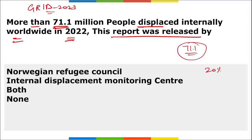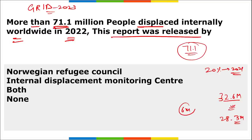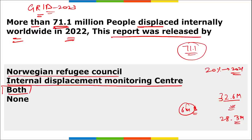This is an increase of more than 20% since 2021. Internal displacement by disasters — such as natural floods or calamities — touched 32.6 million, while displacement due to conflict or violence was around 28.3 million. Because of the Russia-Ukraine war, almost 6 million people were also displaced. This GRID 2023 report was released by the Norwegian Refugee Council and the Internal Displacement Monitoring Centre.